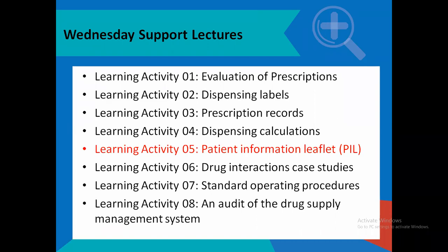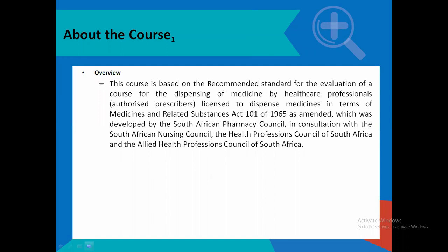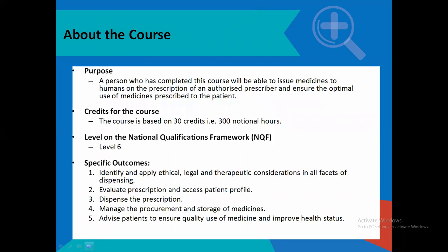It doesn't matter where you begin, as long as by the end of the course all eight activities are done. The course is basically to assist all authorized prescribers to become licensed dispensers. If you wish to be a licensed dispenser and dispense medicines within your facility, when you are deemed competent through this course, you can then request a license from the Department of Health. It is a 30-credit, 300 national hour course. After completion, you will have a Level 6 NQF qualification.